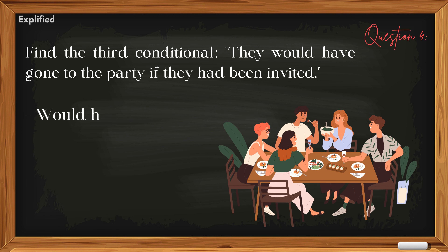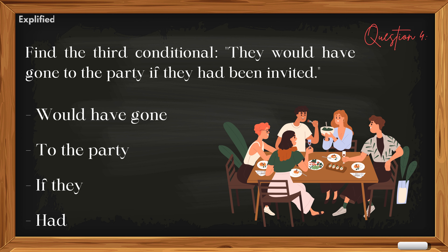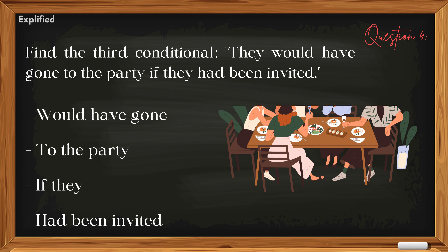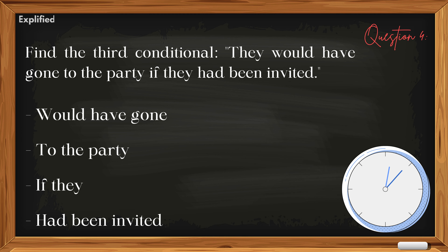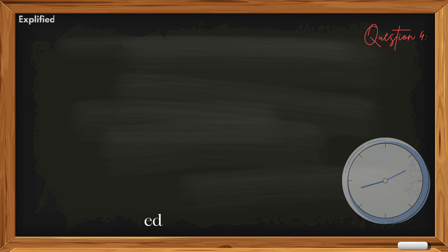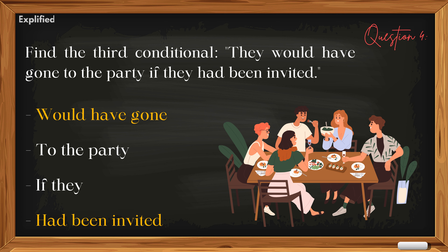Question 4: Find the third conditional. 'They would have gone to the party if they had been invited.' Options: 'Would have gone to the party if they had been invited.' Answer: 'Would have gone, had been invited.'